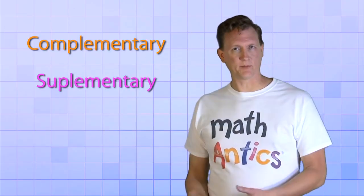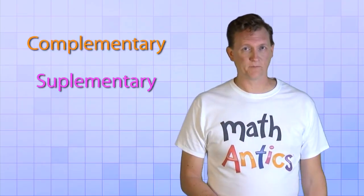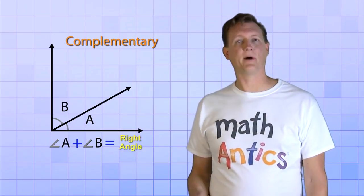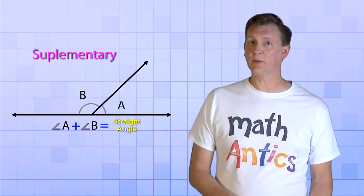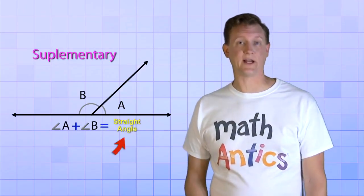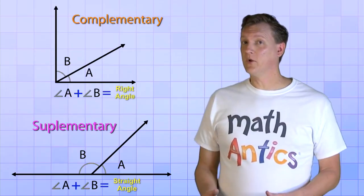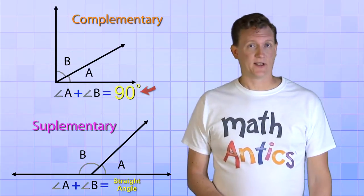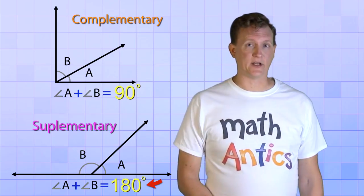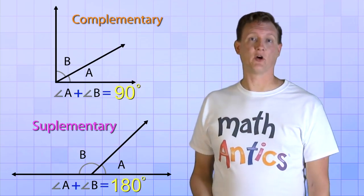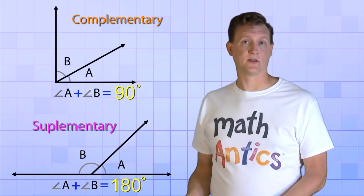Alright, there's one more thing I want to teach you in this video because you'll probably see this kind of geometry problem on your homework or tests. Do you remember what complementary and supplementary angles are from the last video? Complementary angles combine to form a right angle and supplementary angles combine to form a straight angle. Well, now that we know that a right angle is 90 degrees and a straight angle is 180 degrees, we can use that information to solve problems that have unknown angles, like this one.